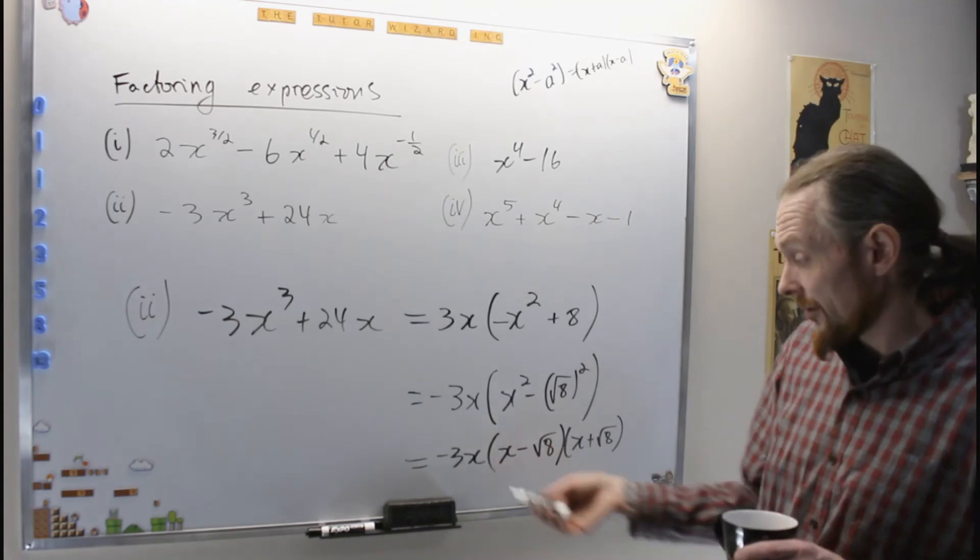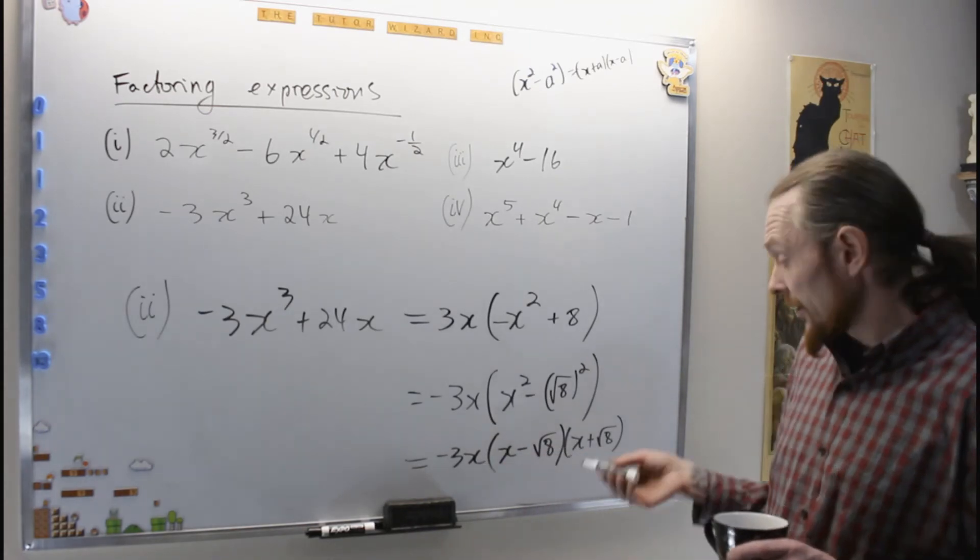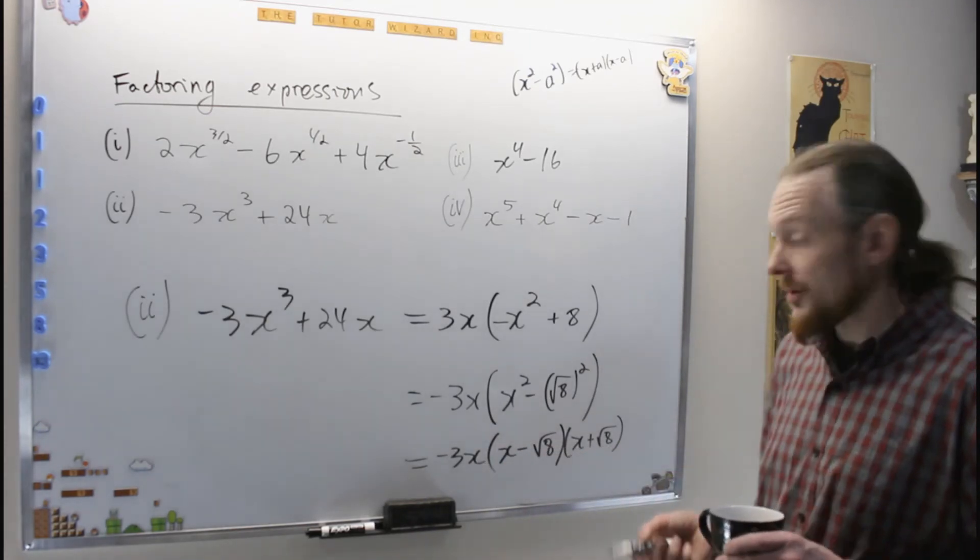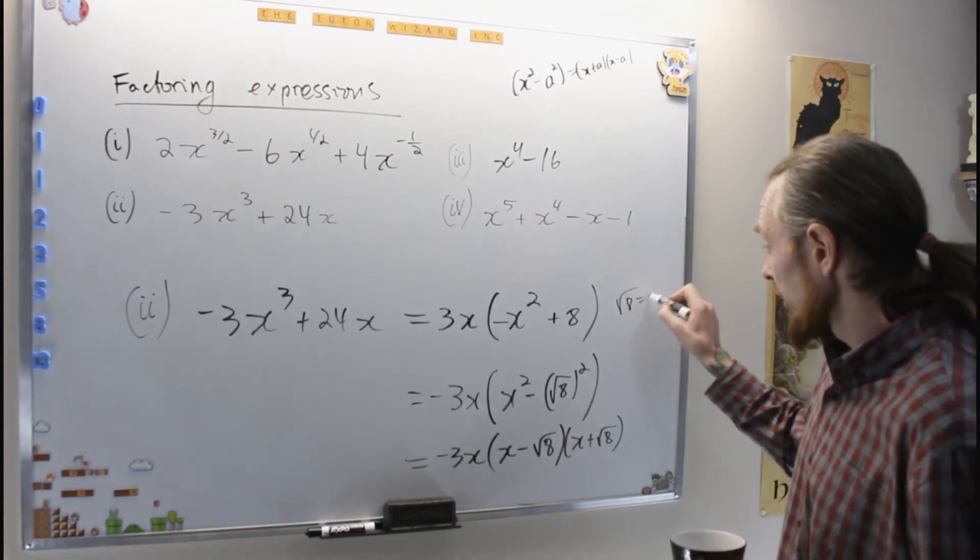And the roots are 0, positive root 8, and negative root 8, which is 2 root 2. Root 8 is 2 root 2.